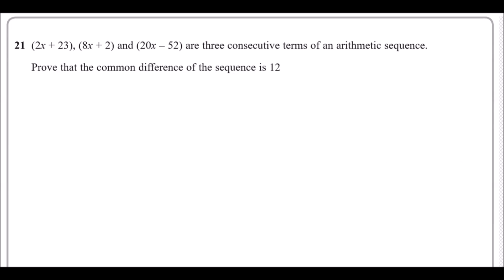And here we go, the final question of the paper. Just like the last sequence in June 2018, this was also the final question. So it looks like arithmetic sequence always comes up at the end of the paper. So it says 2x plus 23, 8x plus 2, and 20x minus 52 are 3 consecutive terms of an arithmetic sequence. Consecutive means each one follows on like 1, 4, 7, 10. Now it wants us to prove that the common difference between each sequence is 12.